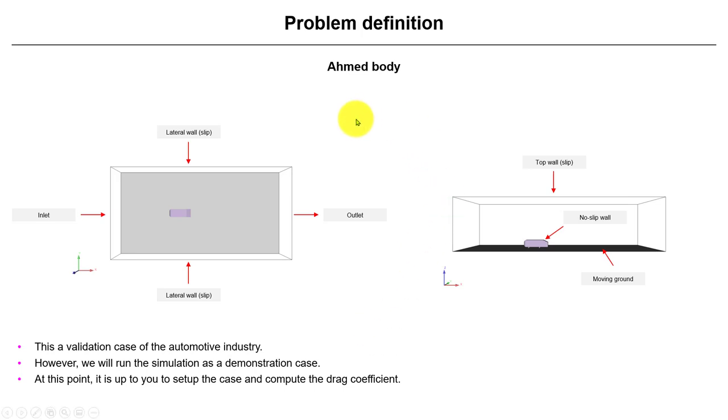Basically what we're going to do in this case is the Ahmed body. Here you have the case, the domain layout. You have the geometry also, you can download it, but you have the drawings for the geometry. You can redo it, make it smaller or bigger, it's up to you. You can redo your mesh. We're giving you something as a starting point. You can use it or feel free to do something else.